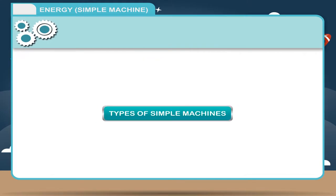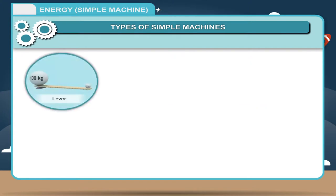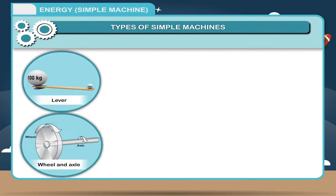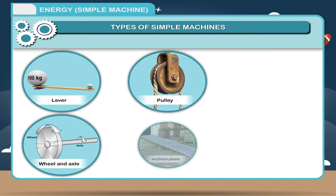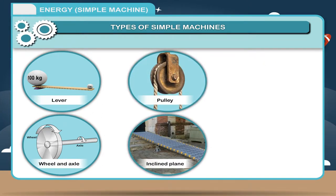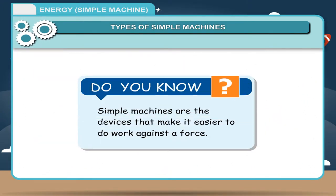Types of Simple Machines: There are different types of simple machines. Lever, Wheel and Axle, Pulley, Inclined Plane, Screw, Wedge. Do you know? Simple machines are the devices that make it easier to do work against a force.